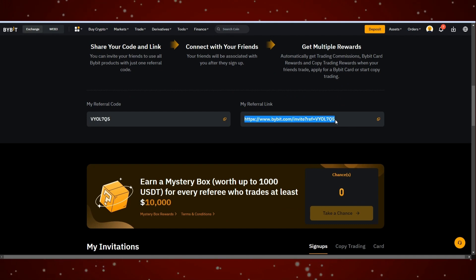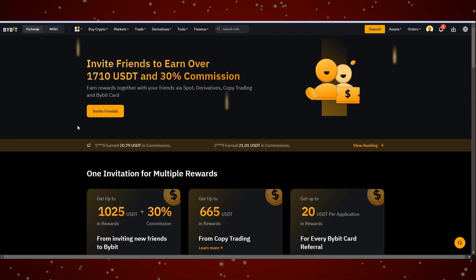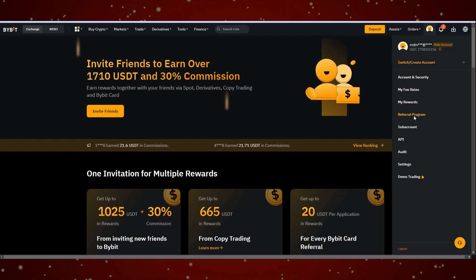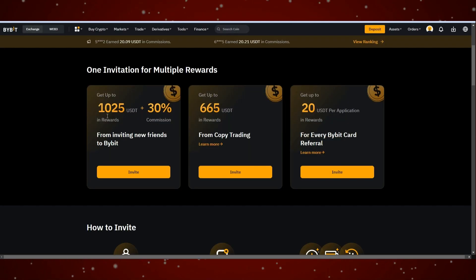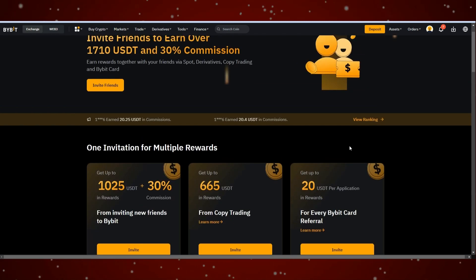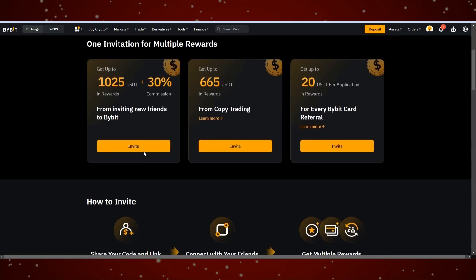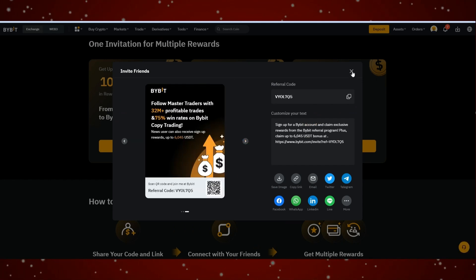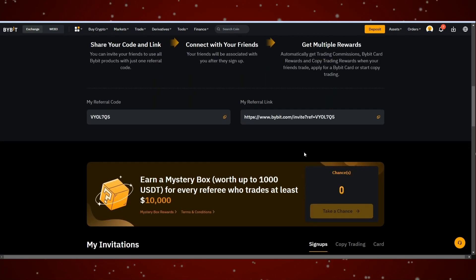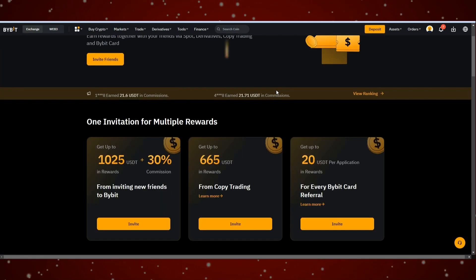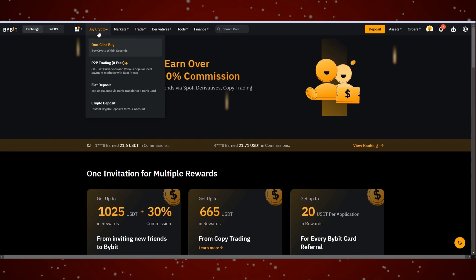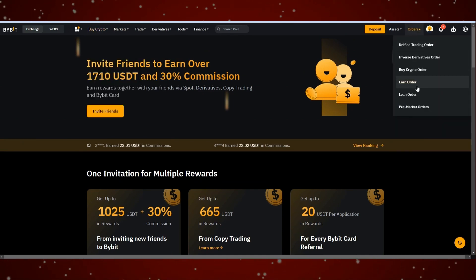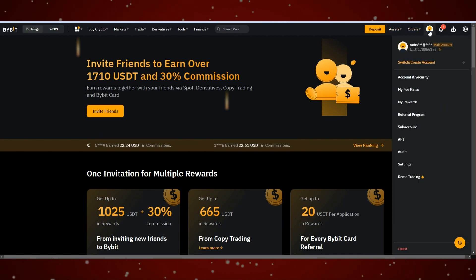Then click on your profile right here. Then click on referral program. And here you can see, invite friends to earn up to 1020 USDT and 30% commission. So when you invite a friend, you both earn 20 USDT and a mystery box worth up to 1000 USDT. So if you sign up through the link in the description, you will also get this 20 USDT worth $20 and a mystery box worth up to $1,000. So then you also get a commission reward and you will earn up to 30% commission for every referee trade. And this will be like this for one year.